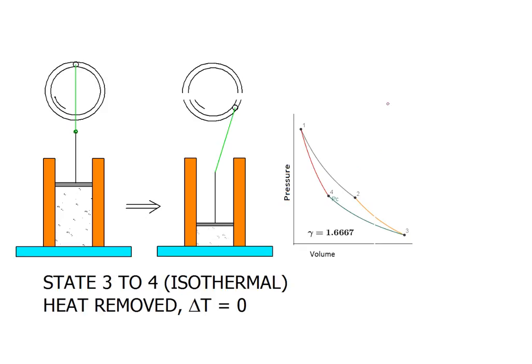As heat is absorbed the piston is contracted and temperature, again isothermal, does not change as heat is removed. The isothermal equation for this segment of the curve is identical to the segment from state one to state two.